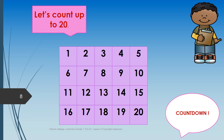Let's count down. 20, 19, 18, 17, 16, 15, 14, 13, 12, 11, 10, 9, 8, 7, 6, 5, 4, 3, 2, 1. Very good.